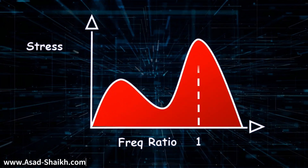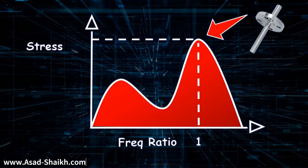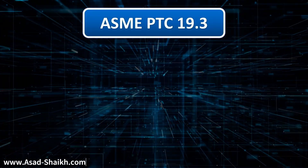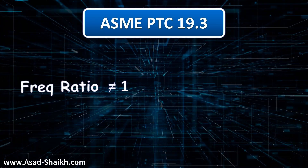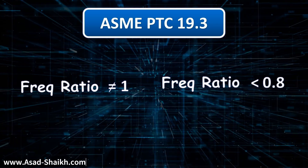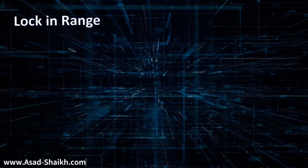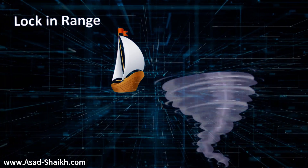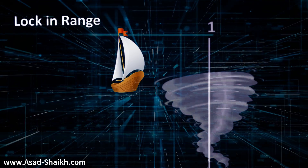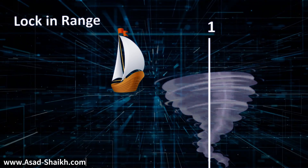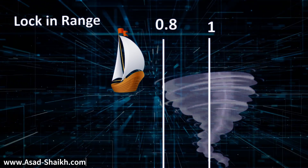In our graph, when the frequency ratio is 1 you will have the highest amount of stress, and that is what we must address in our wake frequency calculation. ASME PTC 19.5 calls this the lock-in range. In a simple analogy, imagine a boat traveling near a tornado — at the center you have the highest force, but even lingering near its perimeters, the tornado can suck the boat in. So even at close proximity you can be pulled inside.